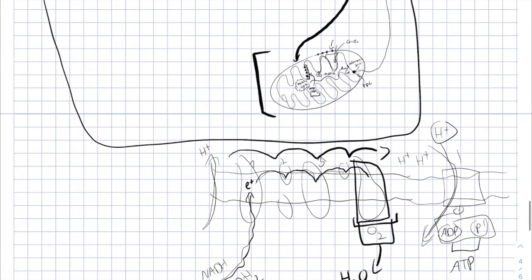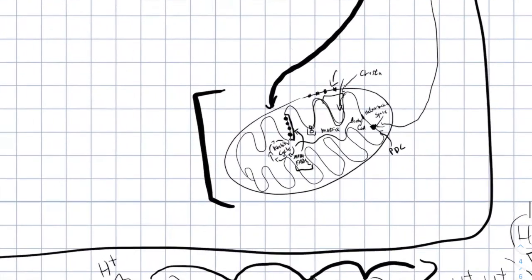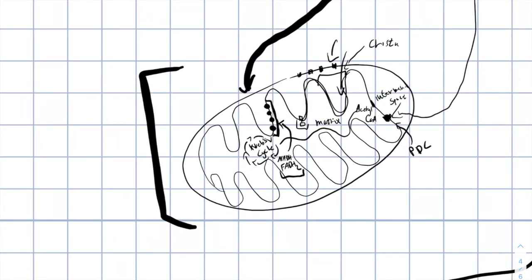So to sum up this entire introduction to cellular respiration: glucose enters the cell, through glycolysis we make two molecules of pyruvate. Pyruvate goes inside the mitochondria and through a complex of proteins called the pyruvate dehydrogenase complex we create acetyl-CoA. Acetyl-CoA goes through the Krebs cycle.